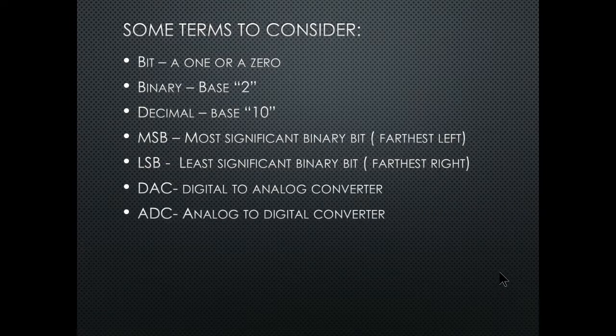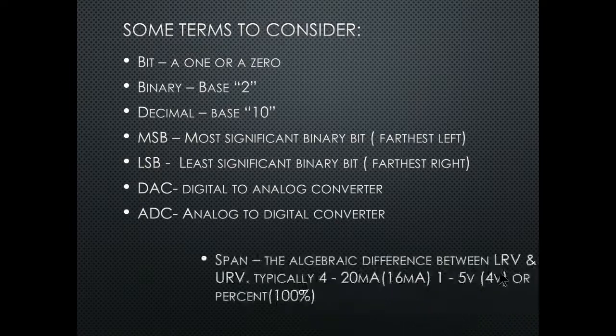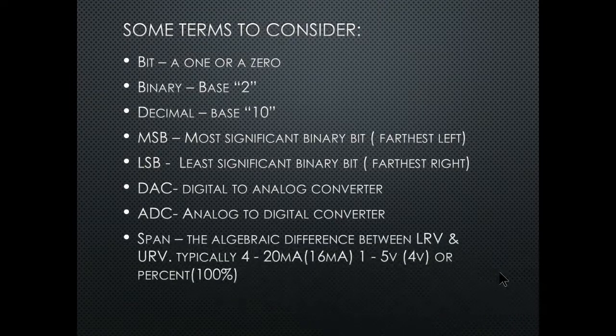DAC is digital to analog converter; ADC is analog to digital converter. Span is the algebraic difference between the lower range value and the upper range value — for us mostly 4 to 20 milliamps with a 16 milliamp span, 1 to 5 volts with a 4 volt span, or 0 to 100 percent.